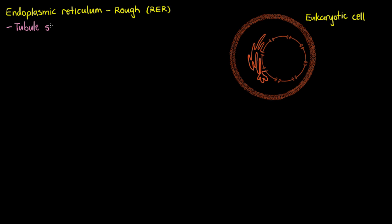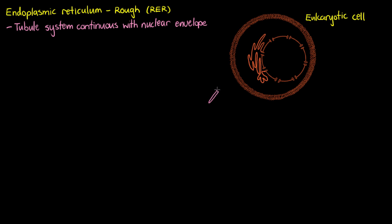We have pores on our skin, so things can get in and out. Well, our nucleus is no different, and some of these pores are going to lead directly to the connected membrane of our rough endoplasmic reticulum. So it's a tubule system that is going to be continuous with our nuclear envelope.